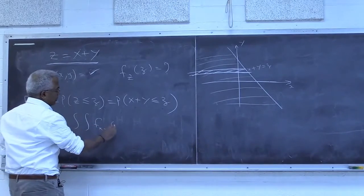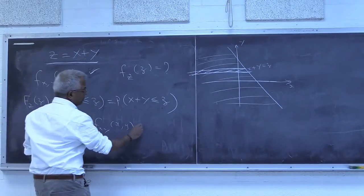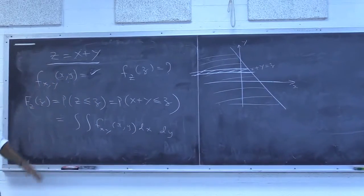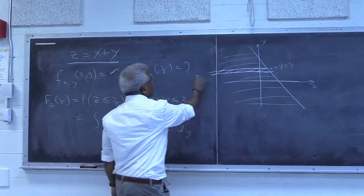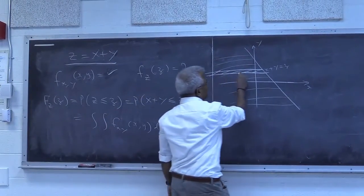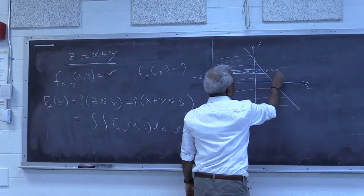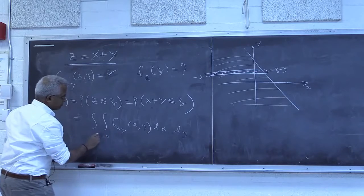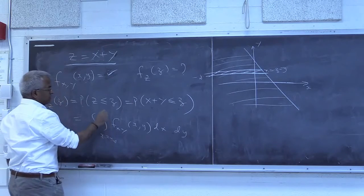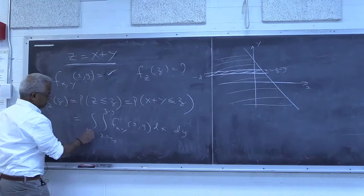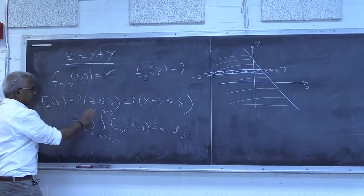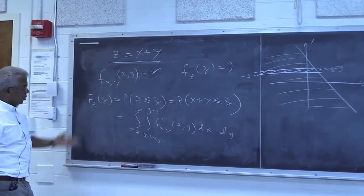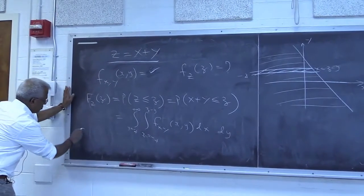So this is a double integral of f_{X,Y}(x, y). First I integrate on x, then integrate out on y. Alternatively, you could take a vertical strip. On x, the limits go from minus infinity to z minus y, and y goes from minus infinity to plus infinity. The next job is simply to take the derivative with respect to z.